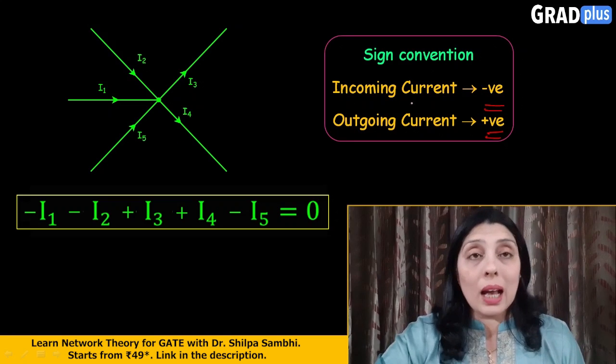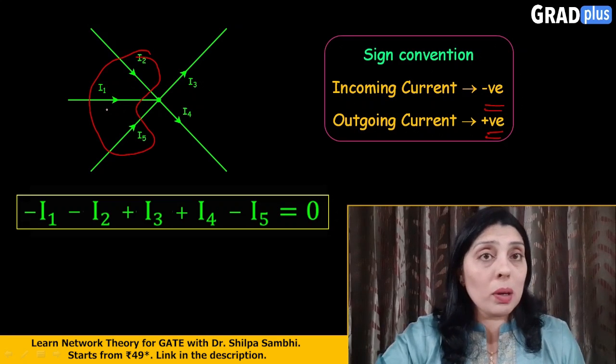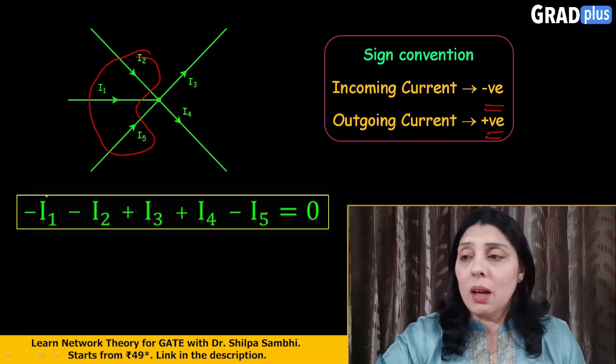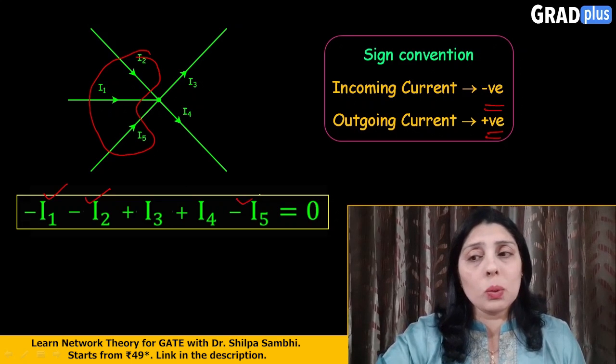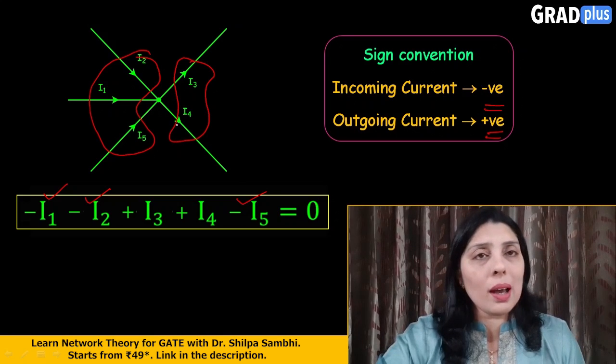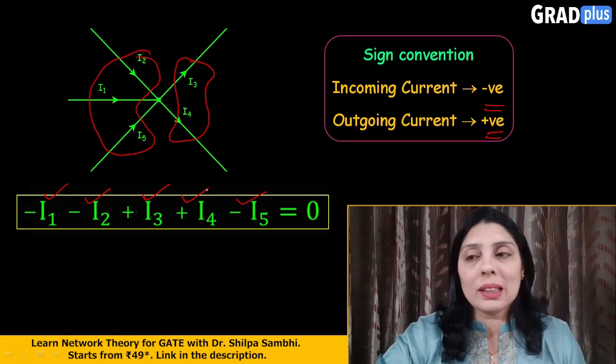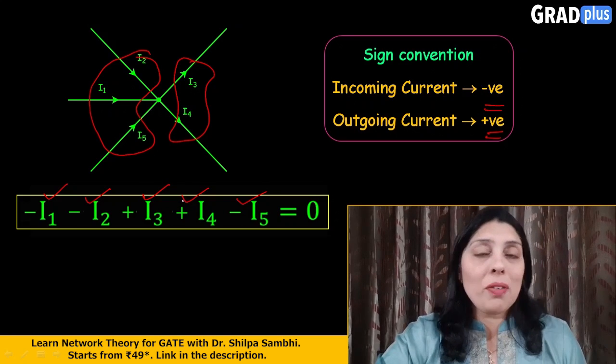Now the incoming current has to be negative which means that the sign of I1, I2 and I5 has to be negative. So in the equation what I have written: minus I1 minus I2 minus I5. And what is happening to this outgoing current here? It has to be with positive sign. So plus I3 and plus I4. And if I'm going to rearrange this equation again for incoming currents on one side and outgoing currents on one side...